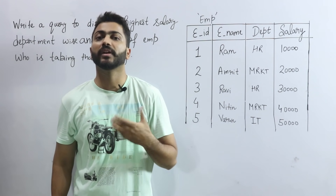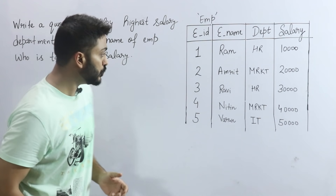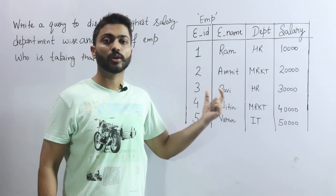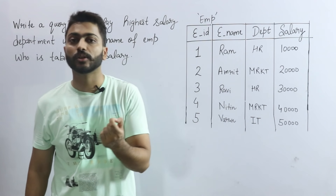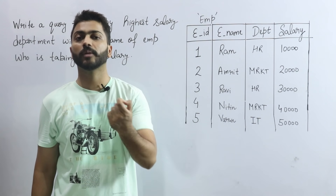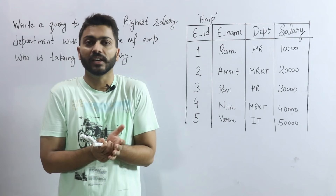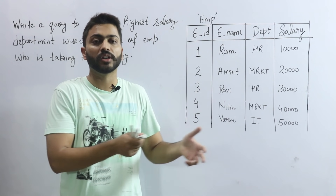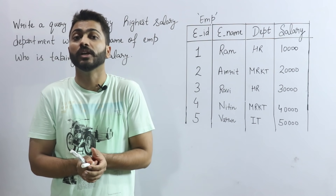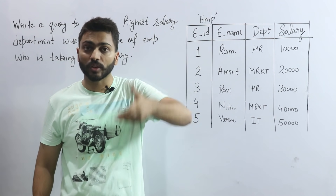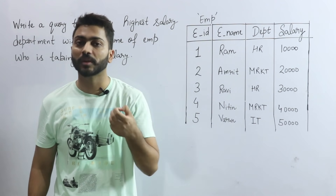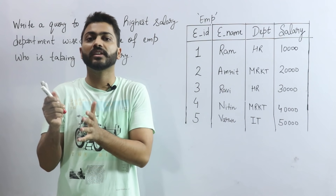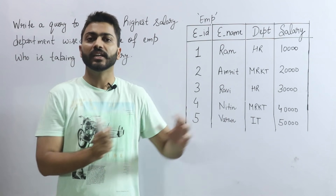हमें department wise highest salary print करवानी है और जो salary आई उसे कौन ले रहा है, उस employee का name print करना है। इस part 5 के लिए पहले part 1, 2, 3, 4 देखना ज़रूरी है। उनकी videos का link मैं नीचे description box में share करूँगा, ताकि आप इन्हें एक series में देखें।